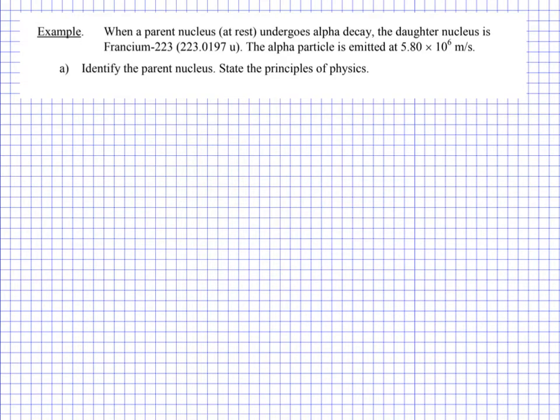Hello everyone. Here's another Physics 30 example set. This is from Unit 6, which is Nuclear Theory, and this is Lesson 2, which is about all the different types of decay reactions.